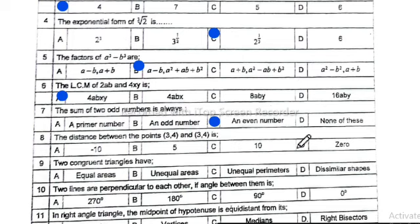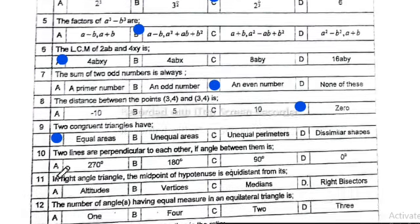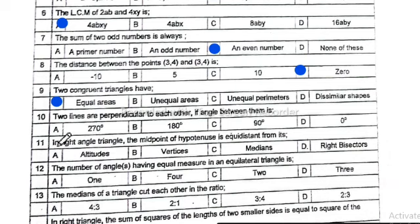Question 8: the distance between the points (3, 4) and (3, 4) is equal to zero. Option D is correct. Question 9: two congruent triangles have equal area. Option A is correct. Question 10: two lines are perpendicular to each other if the angle between them is 90 degrees. Option C is correct.